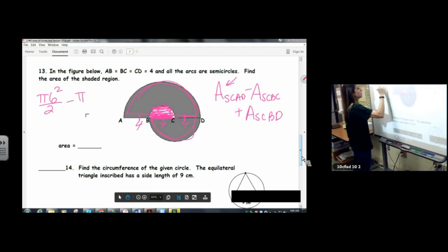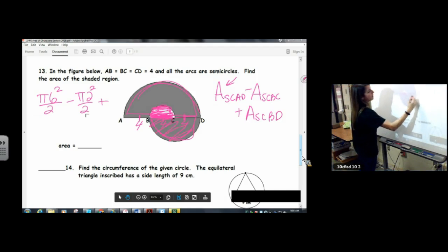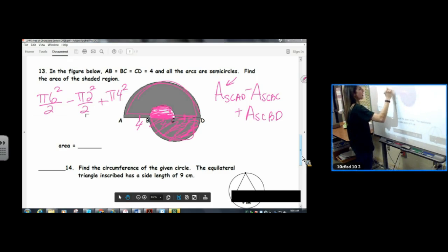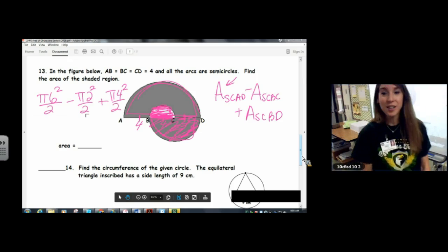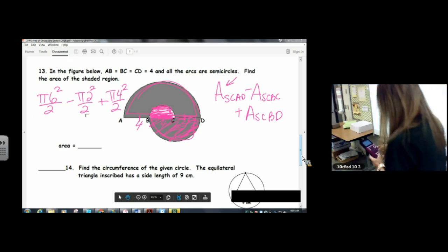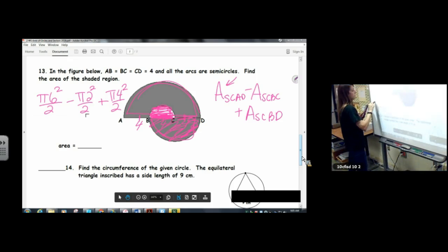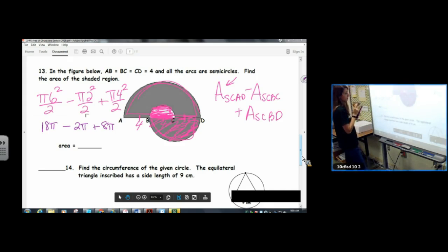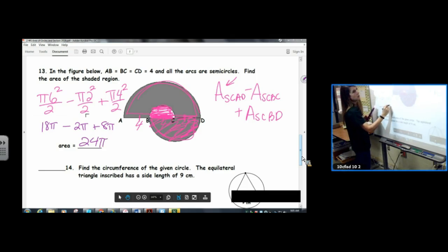The radius is 2. So pi r squared, but we want a semicircle, so divide by 2. Now we're going to add in this one. The radius of this one is 4. Pi r squared, and we only want a semicircle. These are all like terms. That's awesome. Let's make these pretty. This one's 18 pi, this one is 2 pi, and this one is 8 pi. Cool. Add those up. Check my math for me. 24 pi.